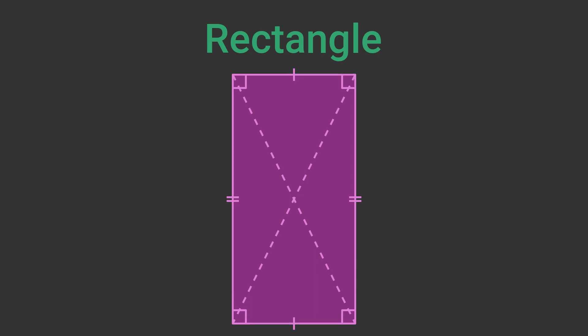The two diagonals of a rectangle are the same length, just like a square. The diagonals bisect each other, but they are not at right angles to each other.